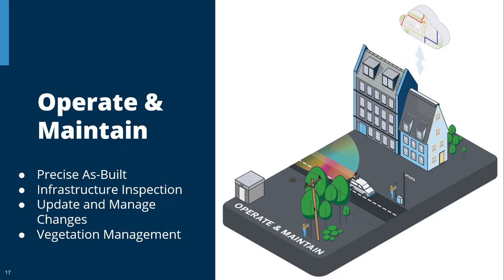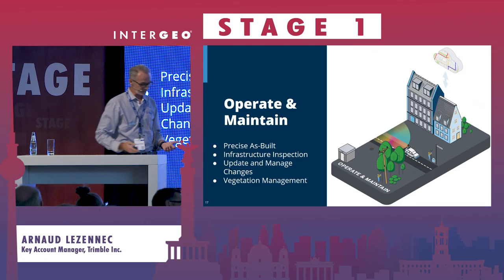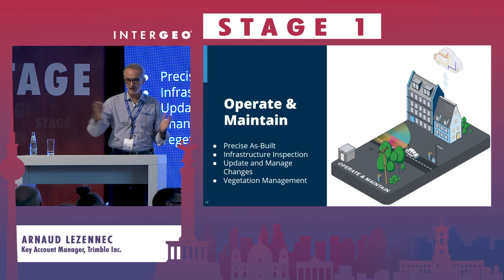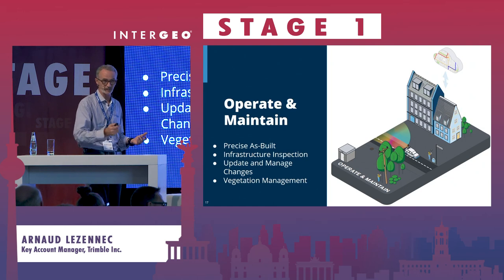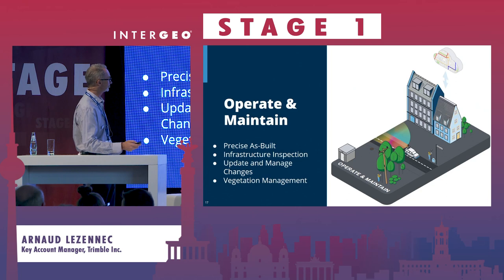For operating and maintenance, they need to know the precise as-built. They need to do inspections — a pole might be tilted quite a lot, vegetation grows and can affect power lines and other elements. We're seeing more and more flooding and storms that damage and destroy infrastructure, so they need to know locations precisely in order to rebuild.